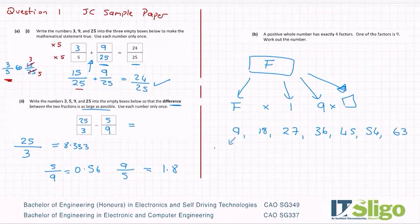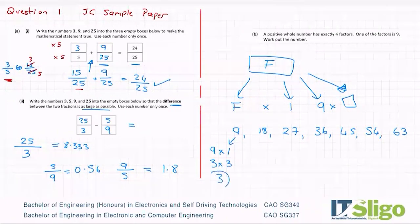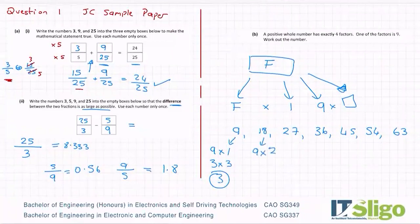The factors of nine, nine by one, three by three. So how many factors does that have? Well, it only has three because we don't repeat the number three. Let's look at the factors of 18. Well, we have nine by two and we have 18 by one. And six, 12, 18, six by three. So that has one, two, three, four. That has six factors. So it's not that one.